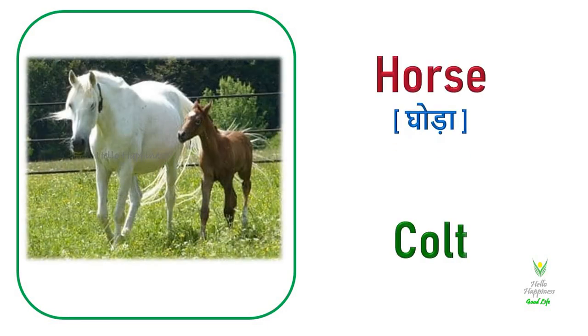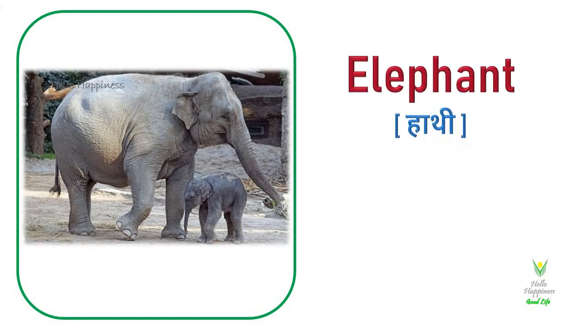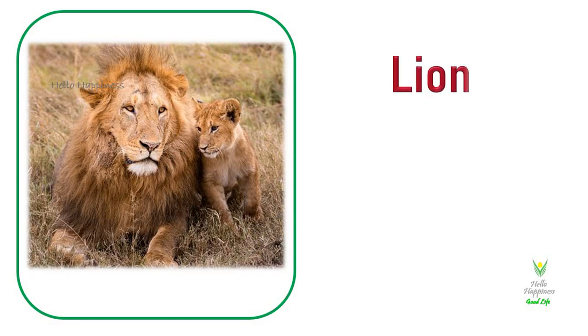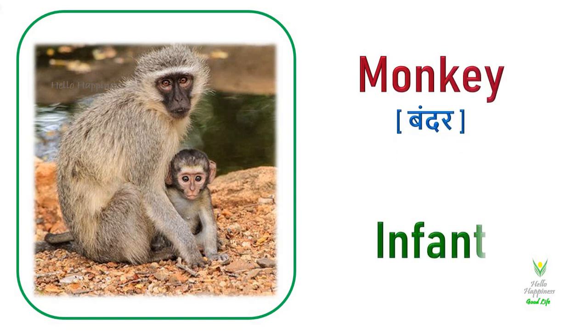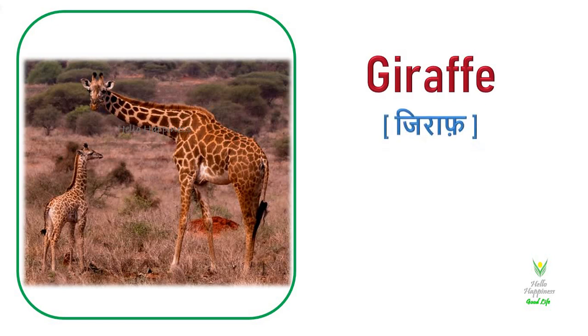Horse. Horse's young one is called a Colt. Elephant. Elephant's young one is called a Calf. Lion. Lion's young one is called a Cub. Monkey. Monkey's young one is called an Infant. Giraffe. Giraffe's young one is called a Calf.